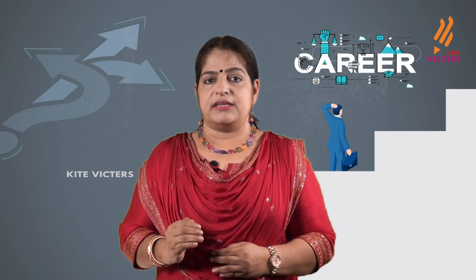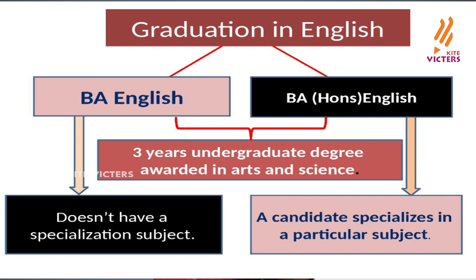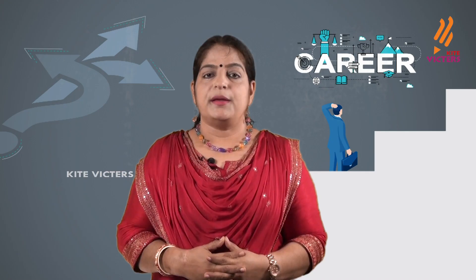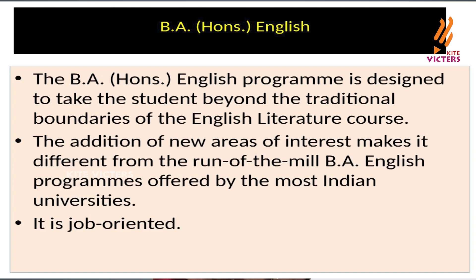Graduation in English comes in two forms: BA English and BA Honours in English, with only a slight difference between the two. In BA English, the candidate has not specialized in any particular subject, whereas in BA Honours, the candidate specializes in a particular subject. The BA English program is designed to take the student beyond the traditional boundaries of the English literature course, and it is job-oriented as well.